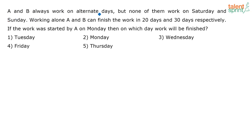A and B always work on alternate days, but none of them work on Saturday or Sunday. Working alone, A and B can finish the work in 20 days and 30 days respectively. If the work was started by A on a Monday, then on which day will the work be finished? So A alone can do the work in 20 days and B in 30 days. The LCM of 20 and 30 is 60.